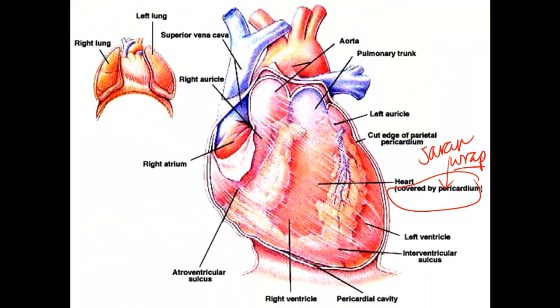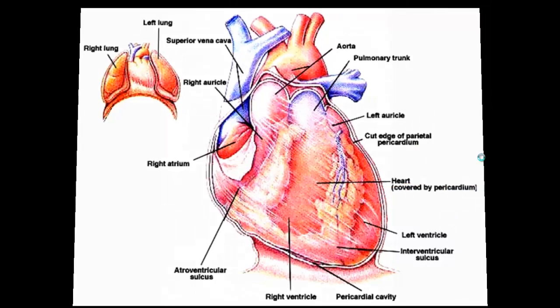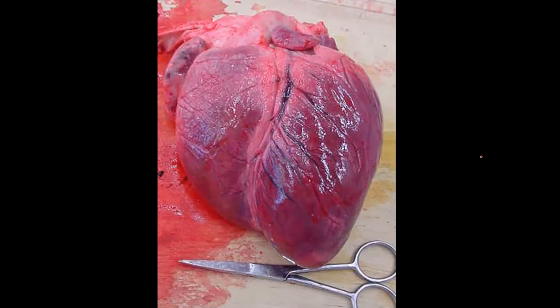You can notice the pericardium when you look inside your rat. You'll have to remove it to get inside the heart and dissect it. This is a sheep heart, so this is what a heart actually looks like.